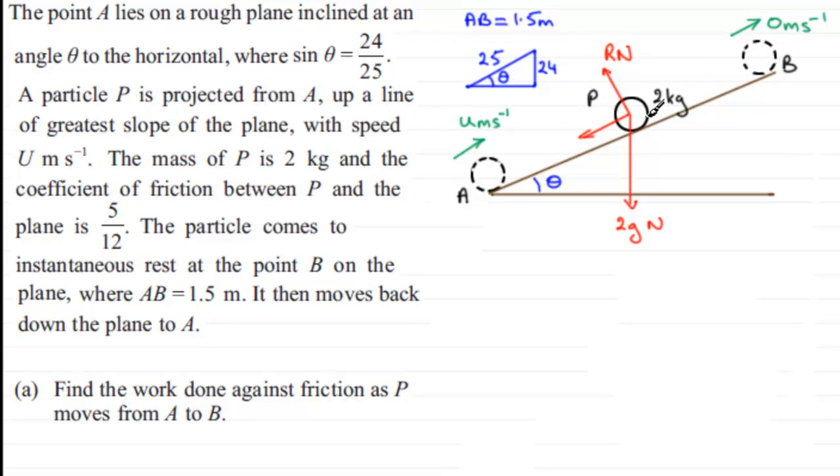Now because it's moving up the plane, friction must be limiting. In other words, this frictional force must be equal to mu, the coefficient of friction, times the reaction R. So this force here is mu R, and it will be then 5/12ths, because mu is 5/12ths, and we'll multiply it by R, and it'll be measured in Newtons.